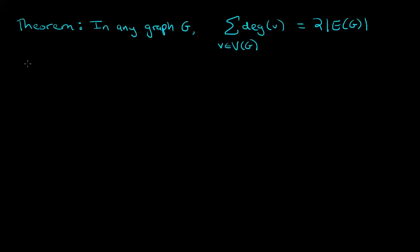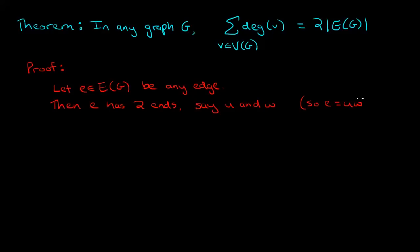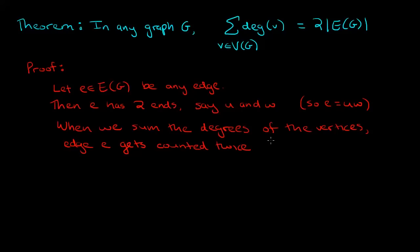So now let's start the proof of this theorem. Let E be any edge in the graph. Then E has two ends. Let's call them U and W. So E is equal to UW. When we sum the degrees of the vertices, edge E gets counted twice. Once in the degree of U term and once in the degree of W term.